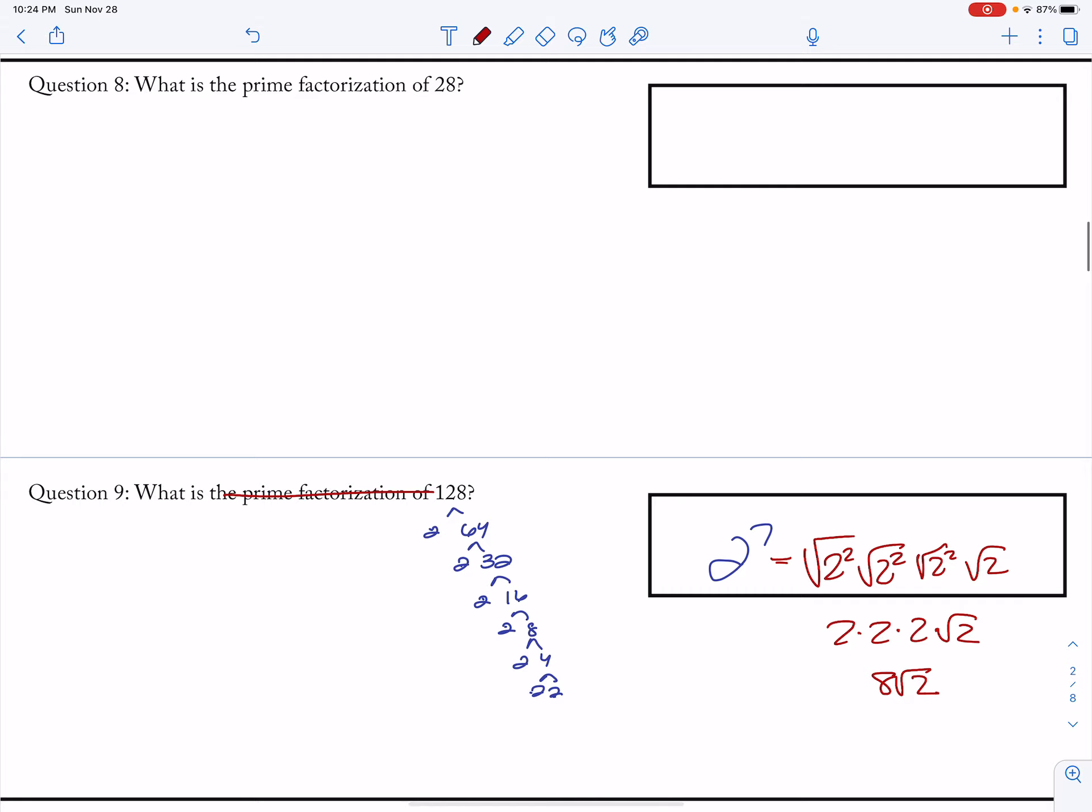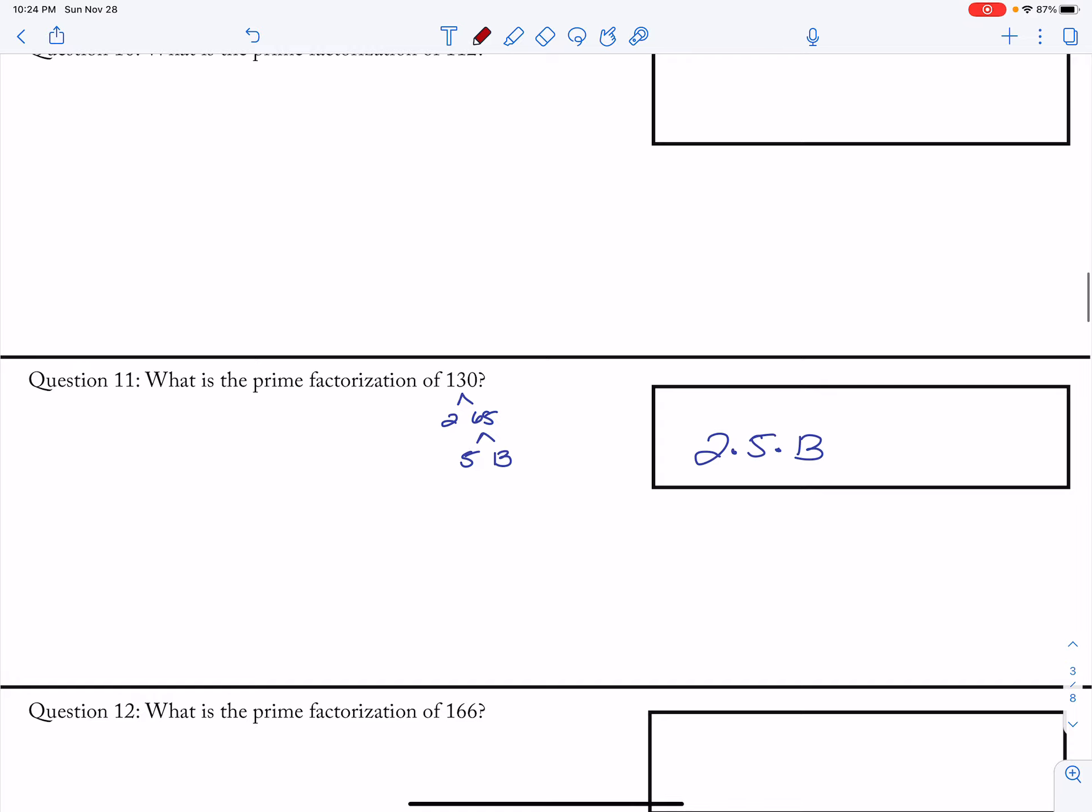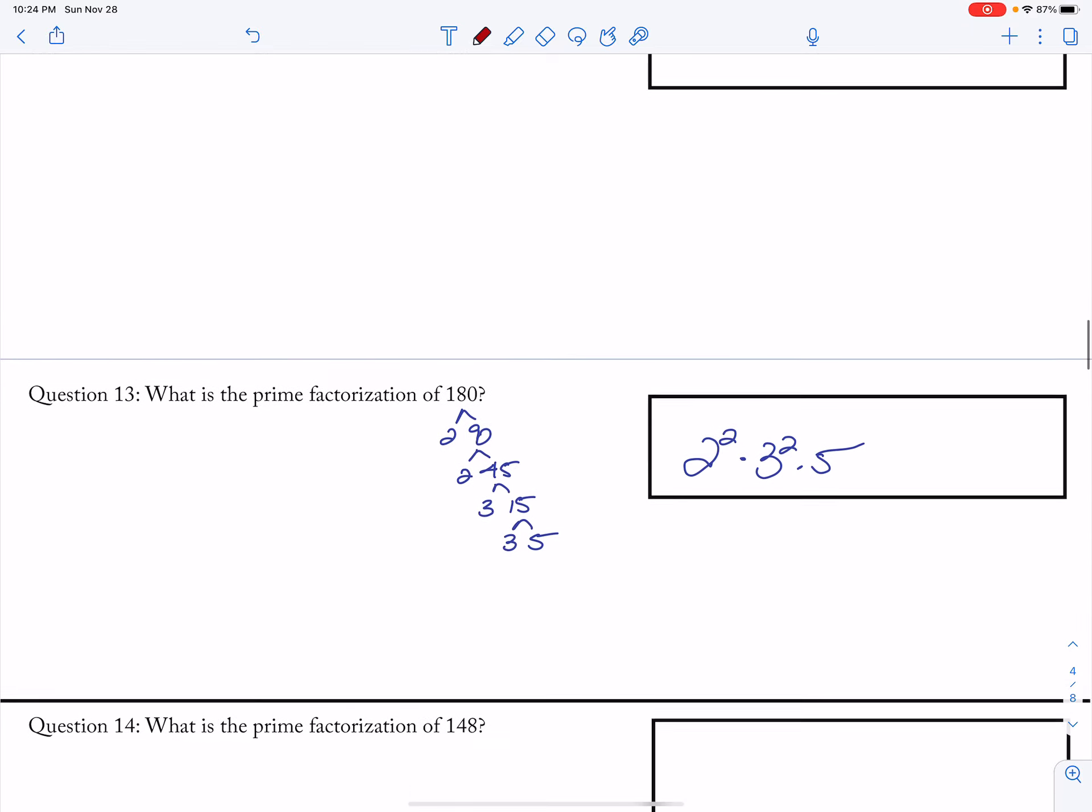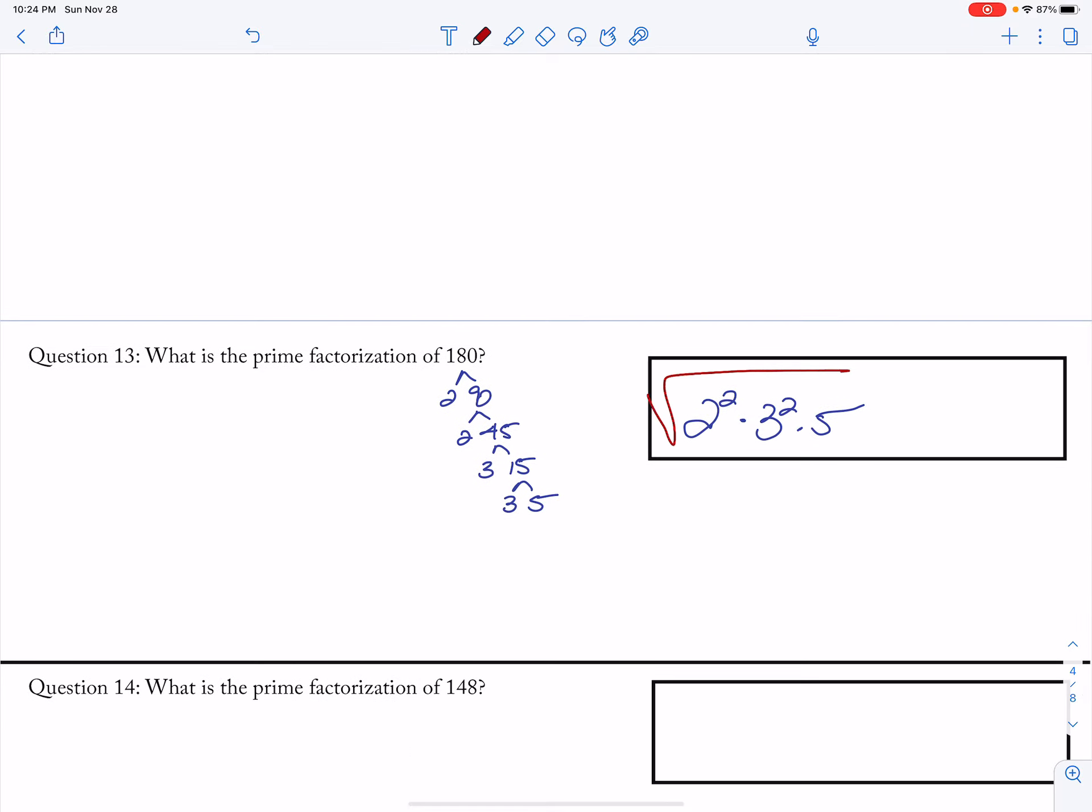Again, change this to square root. And then that makes our next one. This is the same thing. It doesn't change any because there's no perfect squares. This one for square root would be 2 times 3 root 5, so 6 root 5.